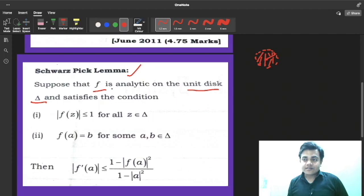Then let's come for the conditions. What are the conditions? That mod F of z is less than or equal to 1 for all z belongs to delta. This is the first condition. And F of a equals b for some points a and b in the delta.